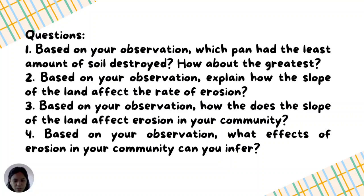Answer some questions about the activity. Number 1: Based on your observation, which pan had the least amount of soil displaced? Which had the greatest? Number 2: Explain how the slope of the land affects the rate of erosion. Number 3: How does the slope of the land affect erosion in your community? Number 4: Based on your observation, what effects of erosion in your community can you infer?